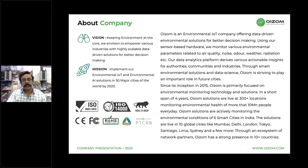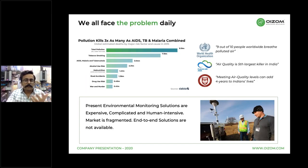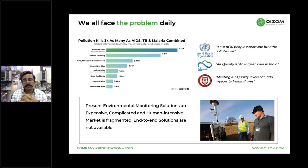Our products have certifications from CE, FCC, ROHS, PTCRB, and SAS. The question that comes up is: why are we concerned about environment and air quality? As a shocking fact, pollution is the fifth largest killer, responsible for more than 4.2 million deaths worldwide — this is pre-COVID-19 data. 1.2 million of those deaths are in India itself. Nine out of ten people breathe polluted air, which reduces four years from their lifespan. Air pollution kills three times more people than AIDS, TB, and malaria combined.